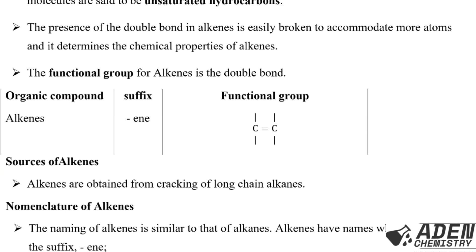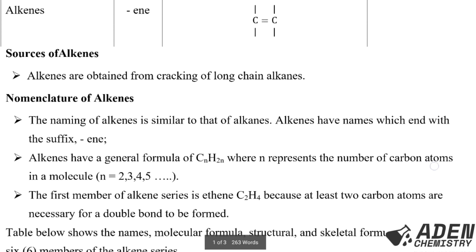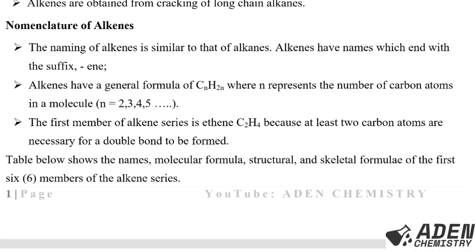Alkenes are obtained from cracking of long chain alkanes. During cracking, short chain alkenes and also hydrogen gas are produced. Next, we are going to proceed to see the nomenclature of alkenes.